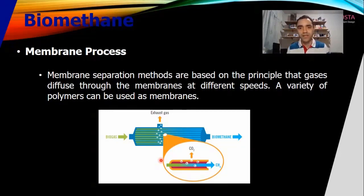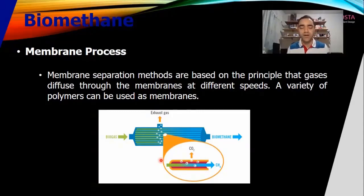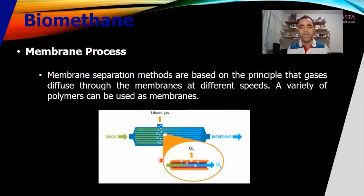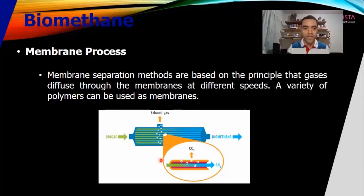An important thing to consider is that, as mentioned, if we have nitrogen as a contaminant, we are not able to remove the nitrogen from the methane using membranes, because the size of methane and nitrogen molecules is very similar and the suppliers are not able to remove the nitrogen using membranes. So this is an important point to observe when we are looking for technology for the purification of biomethane.